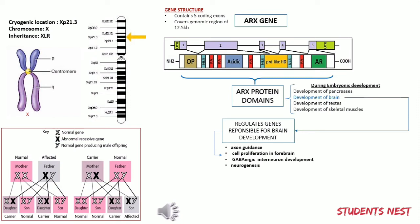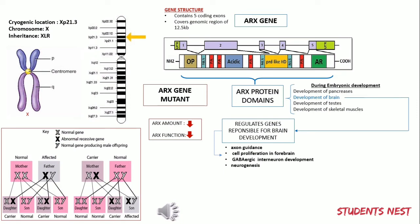A mutated ARX gene gives rise to an altered version of the ARX protein, disrupting its unique structure and regulatory function, leading to decreased ARX activity. Some mutations also decrease the rate of expression, depleting the number of ARX proteins available to carry out their function. All these factors disrupt brain development at an early and sensitive stage of life, eventually leading to seizures and intellectual disability.